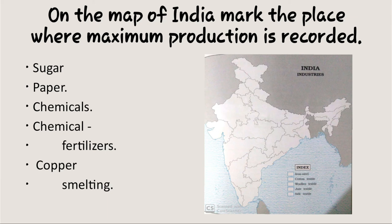For paper production industry, maximum paper production is in Andhra Pradesh, Maharashtra, West Bengal, Odisha, Karnataka, Gujarat, and Madhya Pradesh. For chemical production, Gujarat leads the country in chemical industry — we directly mark Gujarat: Ahmedabad, Vadodara, Ankleshwar, Bharuch etc.